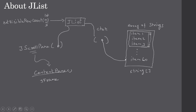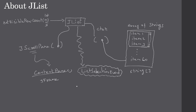When a JList item is selected it raises an event called ListSelectionEvent. We can implement a ListSelectionListener and override the valueChanged method, which will receive this ListSelectionEvent.